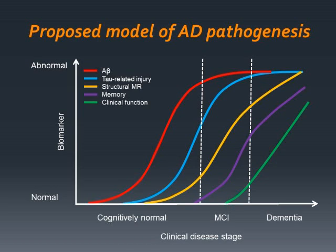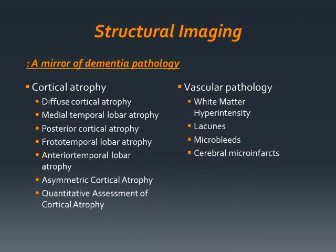This cortical atrophy can be observed in structural MRI even before the mild cognitive impairment phase and may help the clinical diagnosis of Alzheimer's disease and Alzheimer-associated pathology. Structural imaging can be a mirror of dementia pathology, as specific patterns of cortical atrophy and vascular pathology distinguish typical Alzheimer's disease from other neurodegenerative dementias. Thus, identification of cortical atrophy patterns and vascular pathology are important for accurate and effective use of MRI in patients with cognitive impairment.